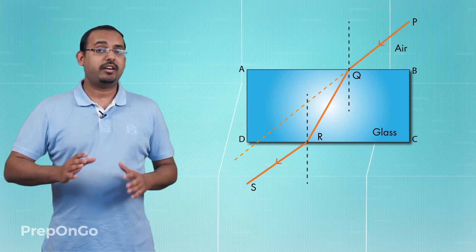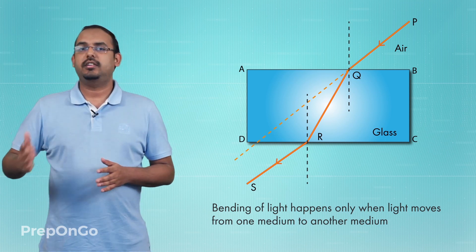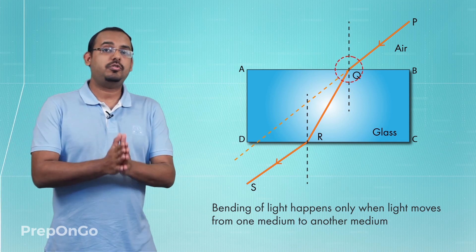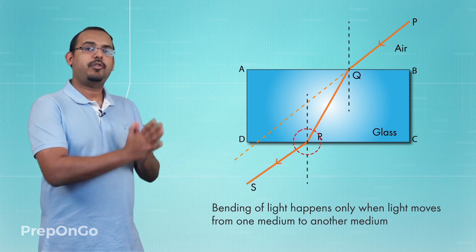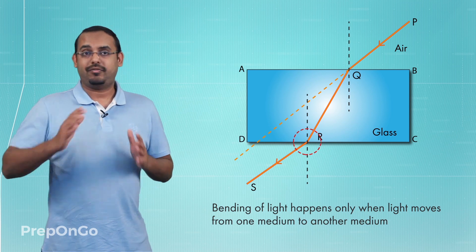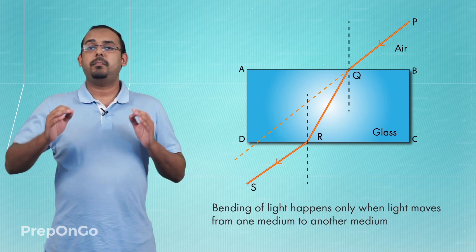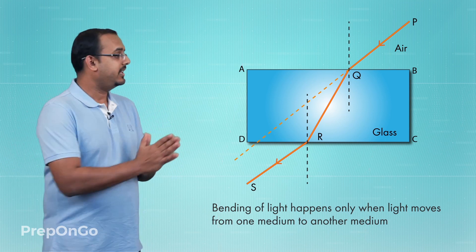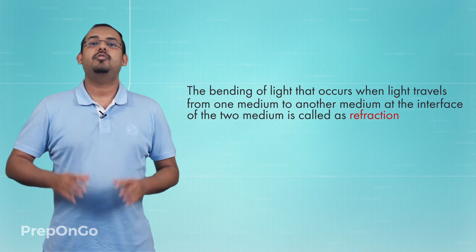The second important observation is that the bending of light, or the change of path of light, happens only when light moves from one medium to another medium. When light moved from air to glass entering the slab, it changed its path. When coming out from glass to air, it again changed its path. This bending occurs at the interface of the two different mediums, and this is what is called refraction of light.